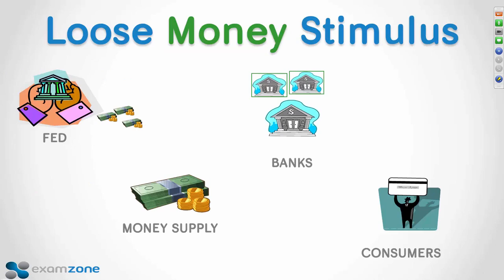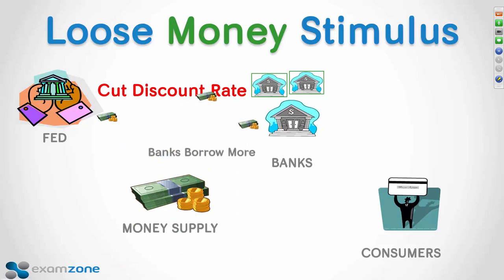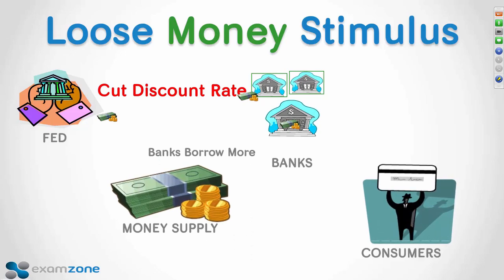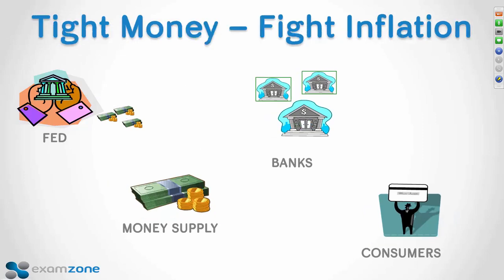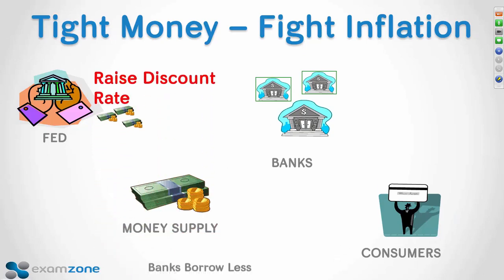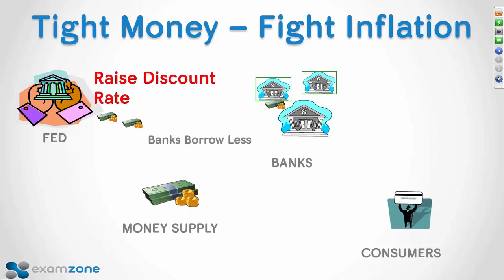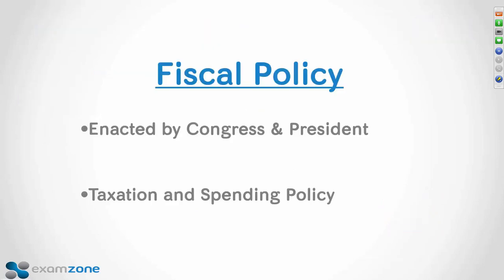If the Fed wants to stimulate the overall economy, one way is by cutting the discount rate — that makes it more attractive for banks to borrow, puts more money in circulation, so interest rates tend to drop and consumers start getting offers that are too good to refuse: 12 months same as cash, no payments for two years. Consumer spending really is the economy — it's two-thirds of GDP. Going the other way, if the Fed raises the discount rate, money's a little tighter, interest rates go up, and consumer spending dips. Monetary policy: discount rate, reserve requirement, and buying and selling treasuries.